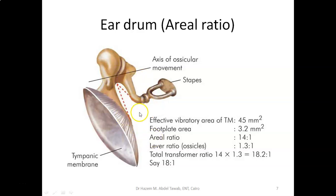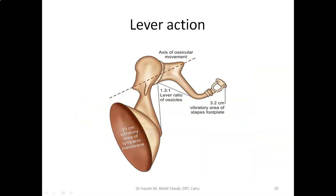The net result of magnification combines the area ratio (14 to 17 times) and the lever action (1.3 to 1). Multiplying 1.3 by 14 to 17 gives approximately 17 to 20 times magnification. So the sound wave entering the external auditory canal is magnified about 17 to 20 times before reaching the inner ear.